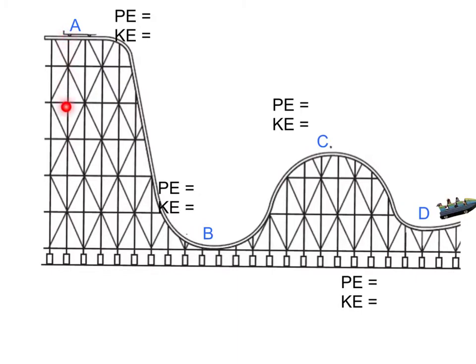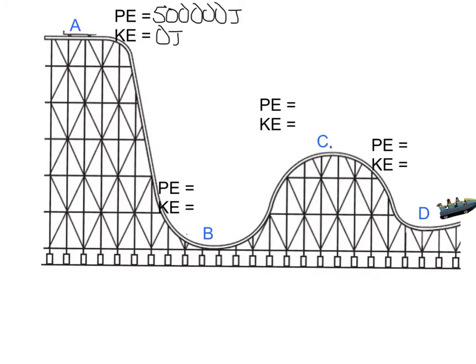Let's say this roller coaster is 500 kilograms and it's at a height of 100 meters. This gives it a potential energy of 500,000 joules and a kinetic energy of zero joules. Hence, its total energy at point A is 500,000 plus zero joules, or 500,000 joules — the total energy throughout the entire ride, no matter where it's at.